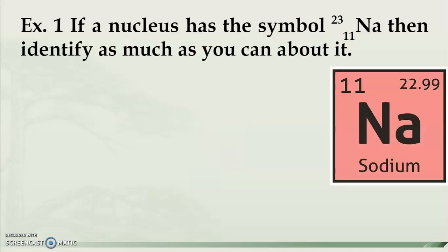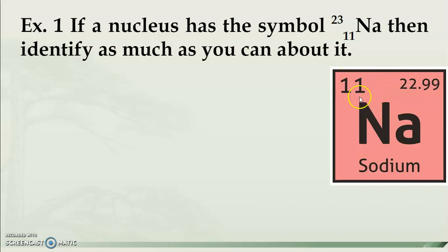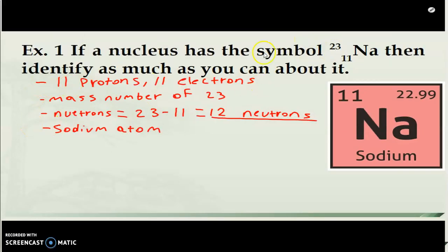Take sodium as an example: it has 23 on the top-left and 11 on the bottom-left. That means 23 is the number of neutrons plus protons, and 11 is the number of protons. On the periodic table, sodium shows 11 — that's the atomic number. Sodium has 11 protons, 11 electrons, and a mass number of 23, so the number of neutrons is 23 minus 11 = 12 neutrons.